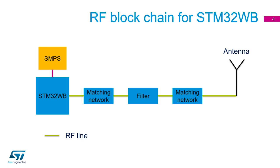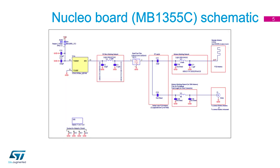The antenna should be matched in operational state. In these conditions, the antenna has a certain reflection coefficient and the matching network has to respect its impedance. Now we show this RF part in real implementation on the application board MB1355C. Significant parts of the schematic described in the following slides are based on this board. The mentioned schematic represents the RF part of the nuclear board.